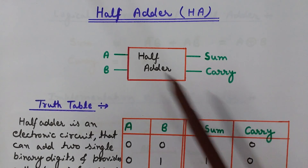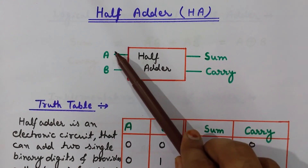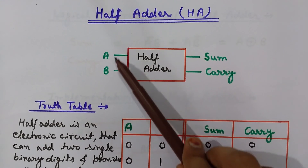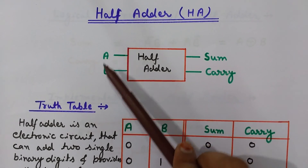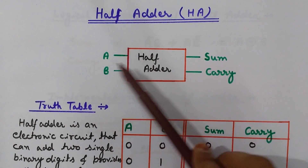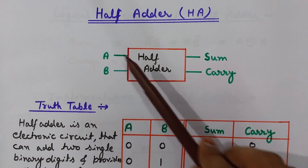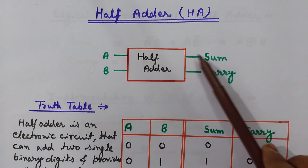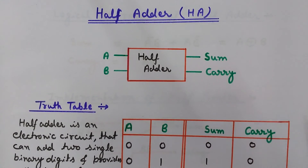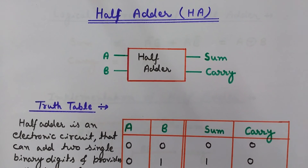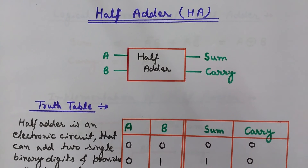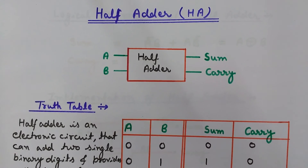The two inputs are A and B — two single binary numbers taking values 0 or 1 — and the outputs are sum and carry. We can also create a full adder using two half adders and one OR gate. Since it performs half the operation of a full adder, it is known as a half adder.